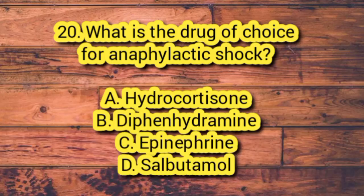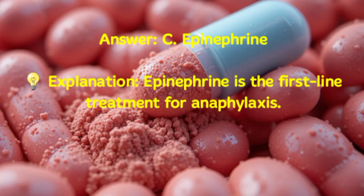Number 20. What is the drug of choice for anaphylactic shock? A. Hydrocortisone. B. Diphenhydramine. C. Epinephrine. D. Salbutamol. Answer: C. Epinephrine. Explanation: Epinephrine is the first-line treatment for anaphylaxis.